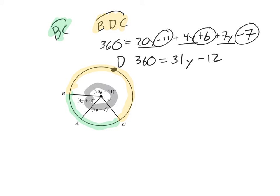We've got a pretty easy equation here. We're going to add 12 to both sides, and so that's 372 equals 31y. We need to divide both sides by 31, which if you plug in your calculator you should get that y equals 12.